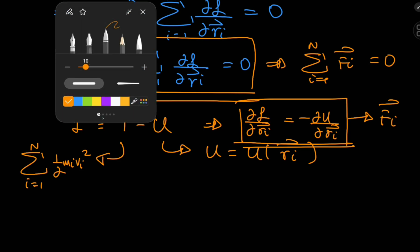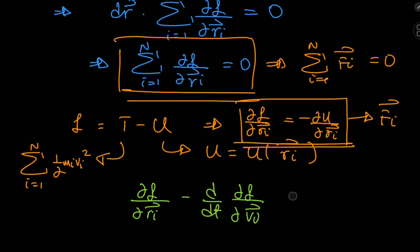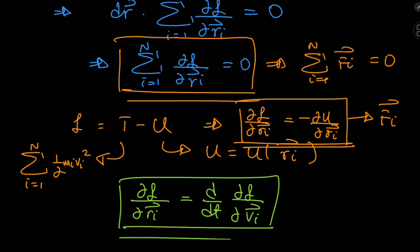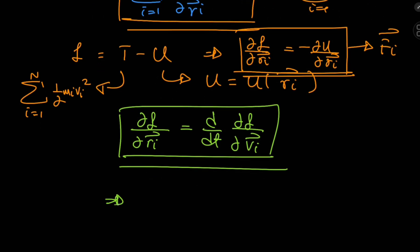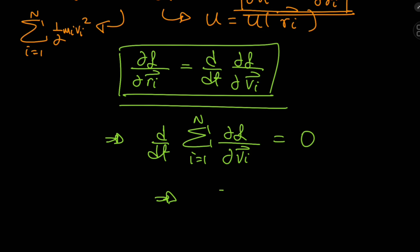So we're going to have to translate this equation a bit to uncover some spicier findings. Let's invoke the Lagrangian equations. We know that ∂L/∂r_i minus d/dt of ∂L/∂v_i equals zero. Popping this relation into our equation, this implies that the time derivative of the sum from i equals 1 to n of ∂L/∂v_i equals zero. That means this quantity — the sum from 1 to n of ∂L/∂v_i — is in fact some constant.